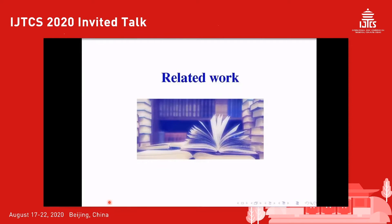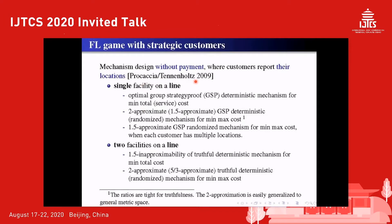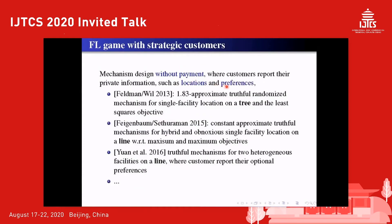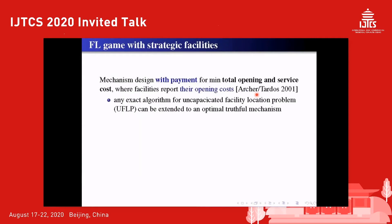Now let us look at some related work. Prokathil and Technohaus first studied a positive meta-mechanism design for facility location games, in which strategic customers report their locations and the mechanism maps the reports to locations for building facilities, considering single or two-facility location games on a line, the one-dimensional space. Since then, models with strategic customers who report private information such as locations and preferences have been widely studied for a variety of metric spaces, such as line, tree, circle, and general metric spaces.